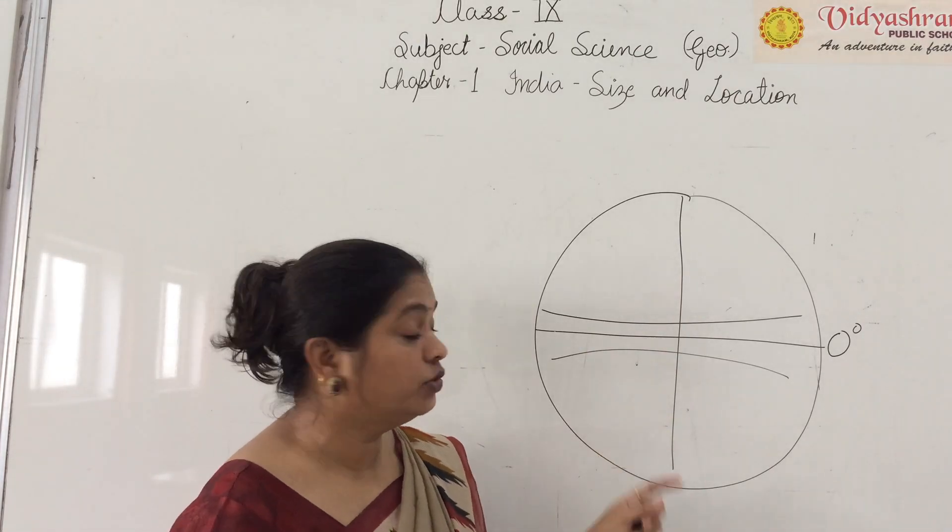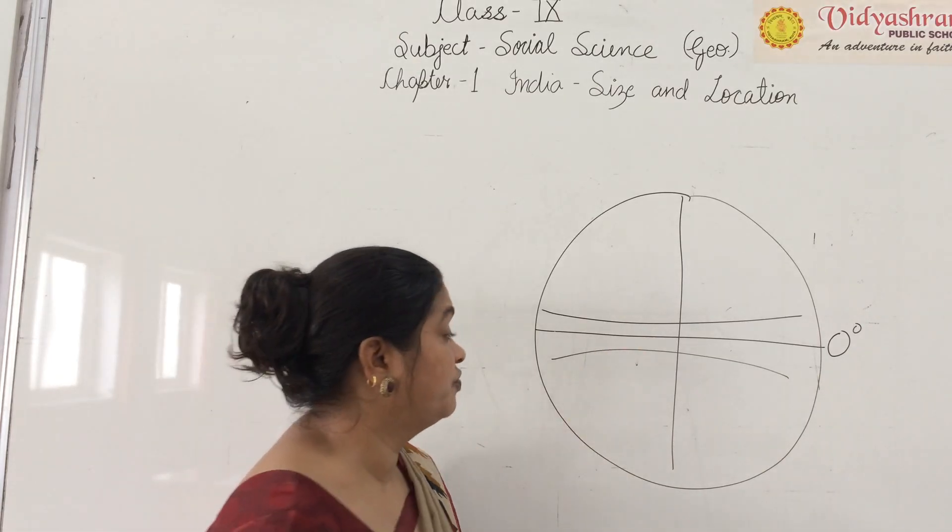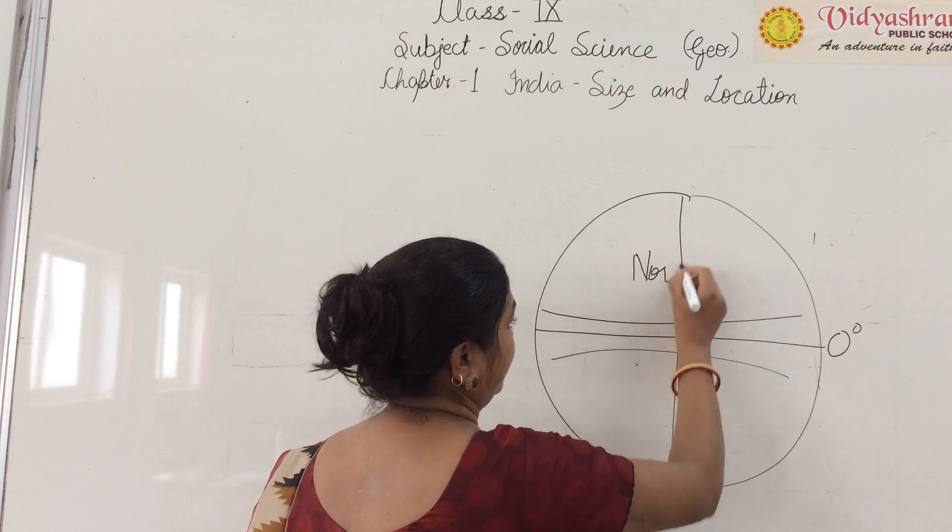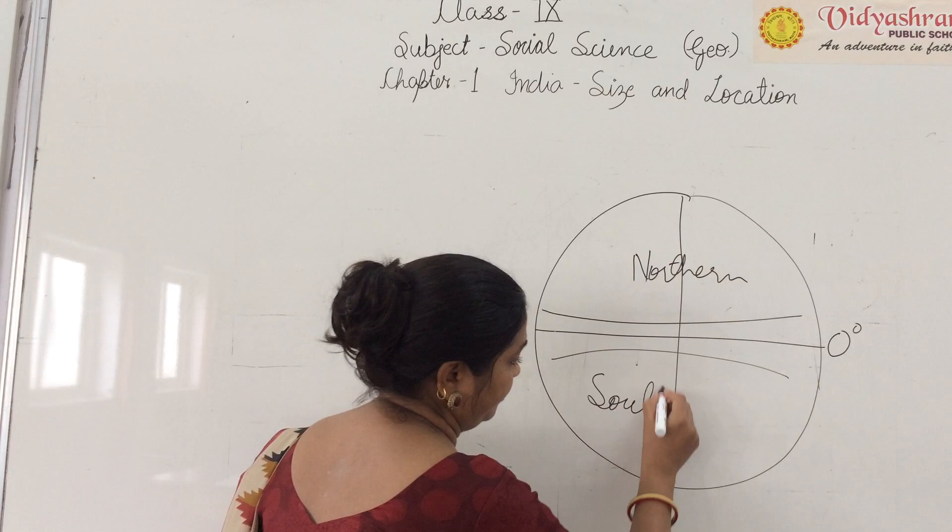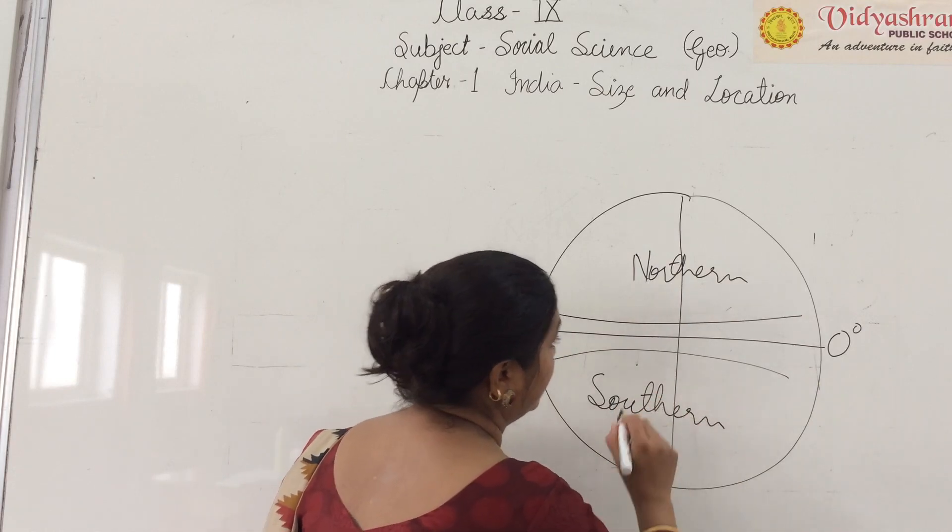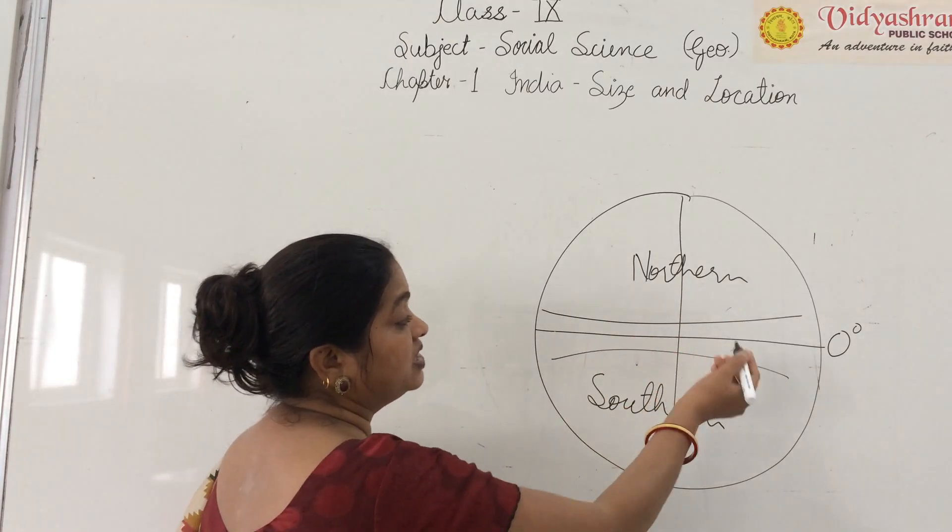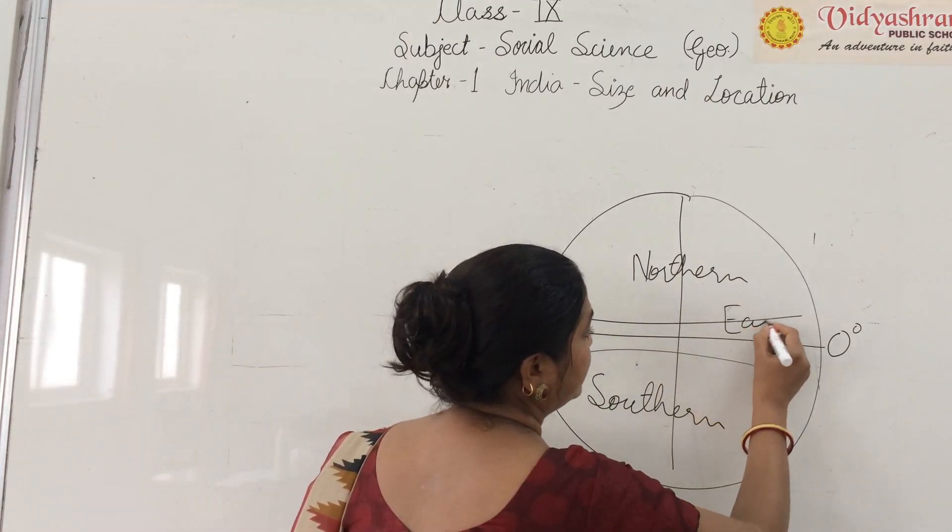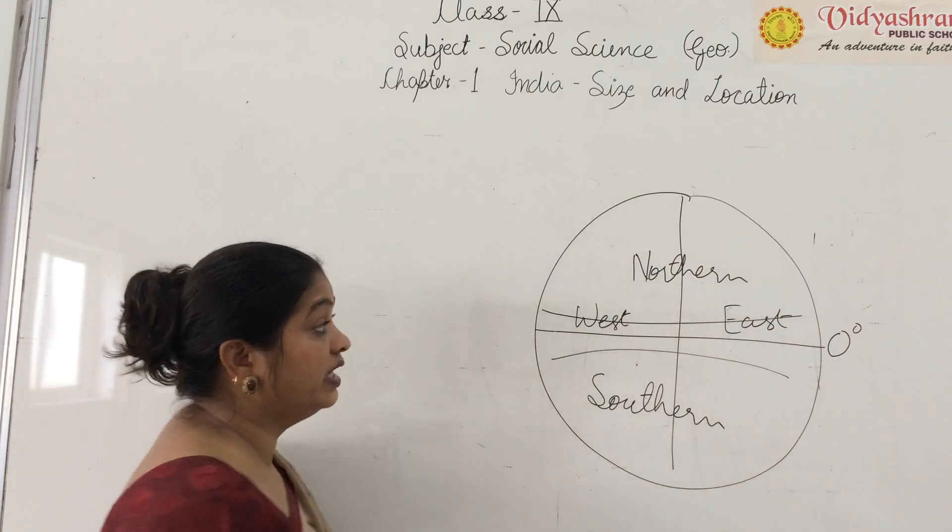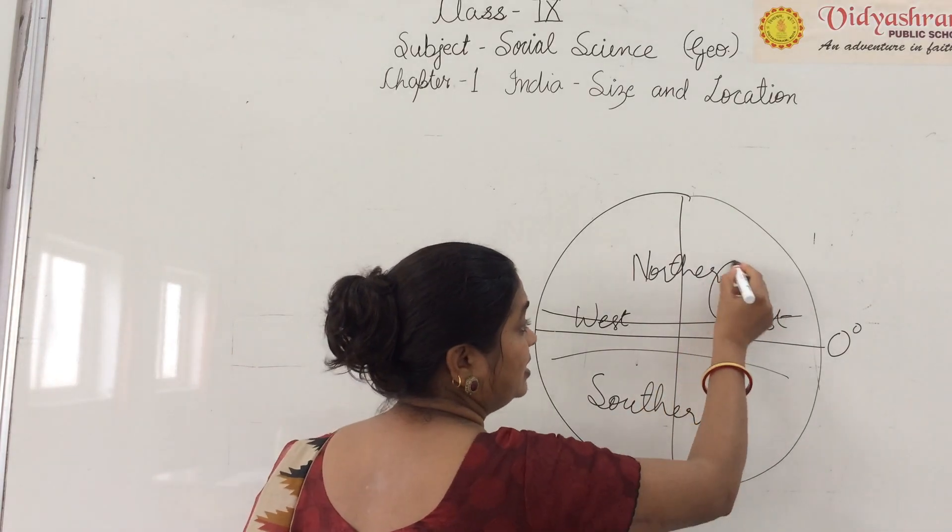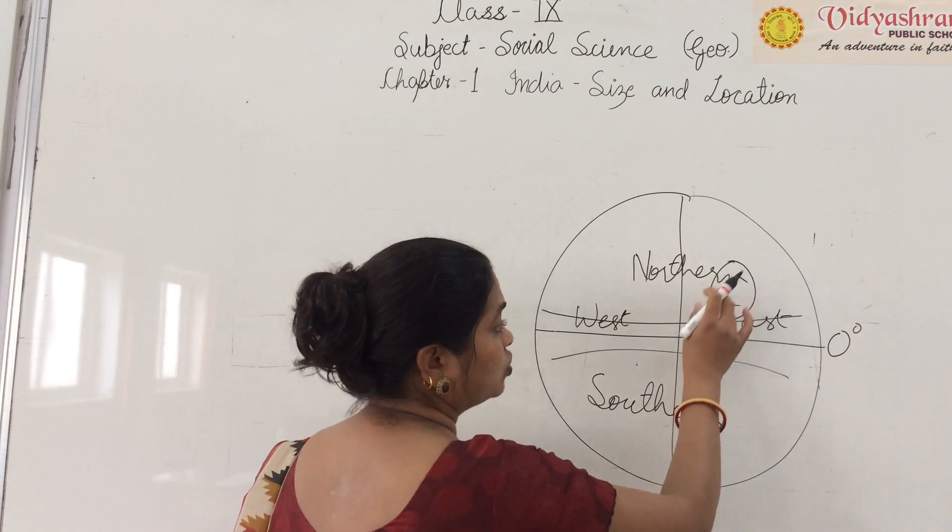If we look at the location of India, India is a very vast country lying entirely in the northern hemisphere. This is your northern hemisphere and this is your southern hemisphere. We can also divide it from eastern and western. This is your eastern hemisphere and this is your western hemisphere. India is completely in the northern and eastern hemisphere.